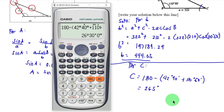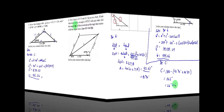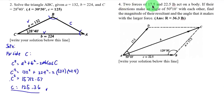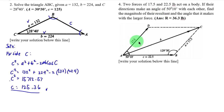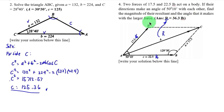For number four: two forces of 17.5 and 22.5 pounds act on a body; their directions make an angle of 50 degrees 10 minutes with each other. Find the magnitude of the resultant and the angle it makes with the larger force. The resultant r is side b of the triangle, and we identify the larger force as 22.5 pounds.